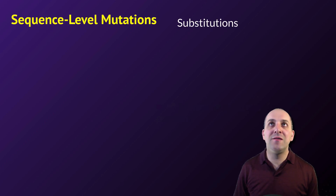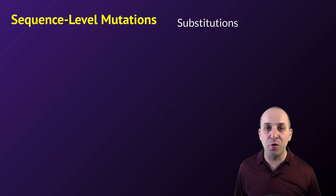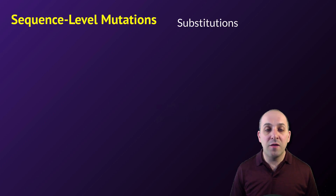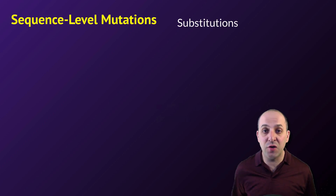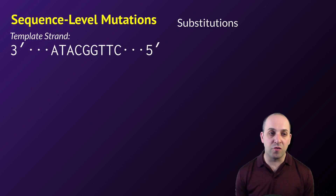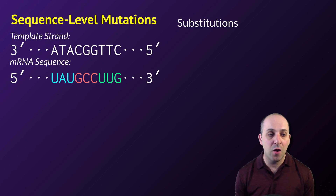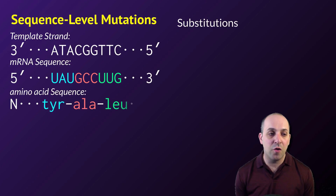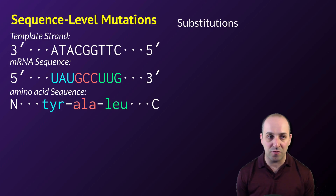Now that we know how DNA works to produce proteins, we can understand how mutations have an effect. Let's look at the major types of sequence-level mutations — mutations happening at the individual base pair level. The first type we're going to look at are substitutions. Here we have a sample template strand of DNA that will be transcribed into an mRNA sequence, and the codons will code for a particular amino acid sequence.